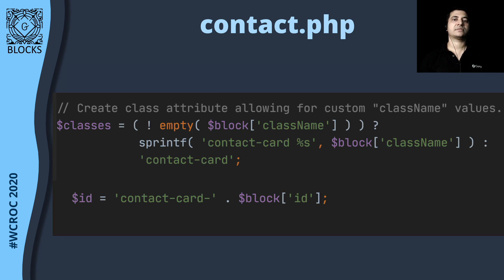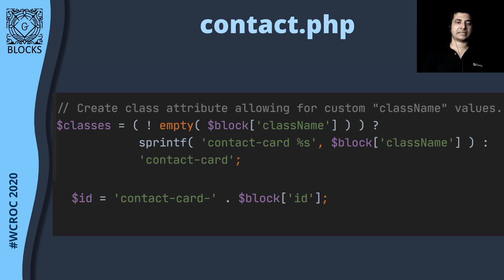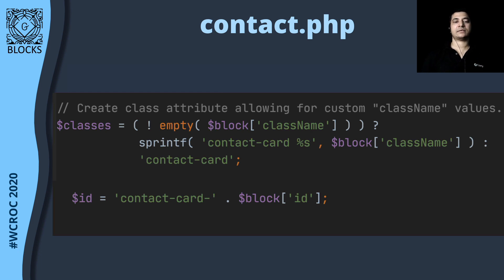We can utilize all of these values to render the content dynamically into our block template. Inside our template, contact.php, we can check to see if the class theme exists in the block variable and also add an additional class name called 'contact-card' to it. We also get the ID of the block and prefix it with 'contact-card'.